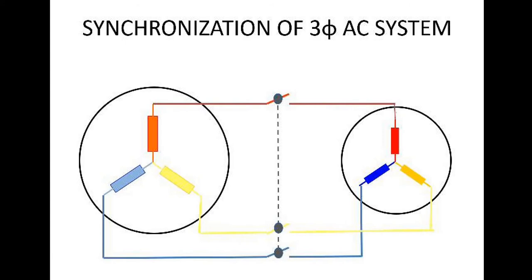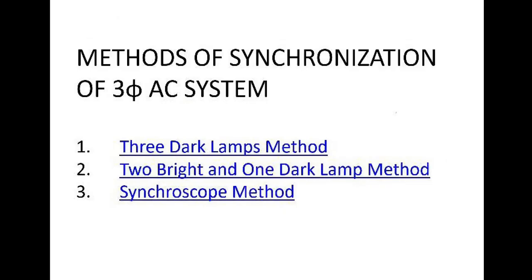Hello friends, you might be thinking from the punchline that how it is possible that two AC systems with the same speed cannot be synchronized. Yes, that is what I am going to explain. First, I will explain what synchronization is — when two AC systems are mutually connected to each other, we call it synchronization. There are three methods by which we can connect two AC systems.